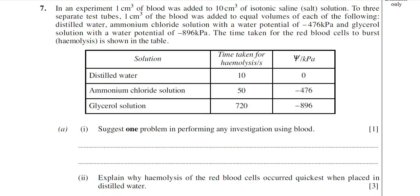This is question 7 from the June 2010 BY1 paper. This question is all to do with osmosis in blood cells, which is an animal cell. Remember you must know about osmosis in animal and plant cells, but this question is purely on animal cells. The question revolves around an experiment where one centimetre cubed of blood was added to 10 centimetres cubed of isotonic saline salt solution.